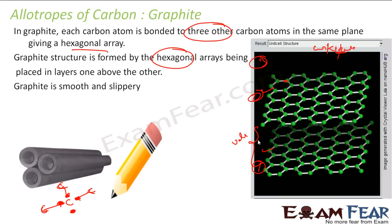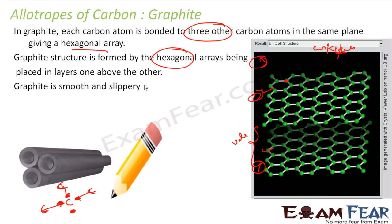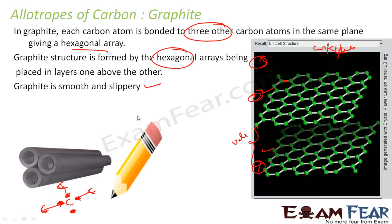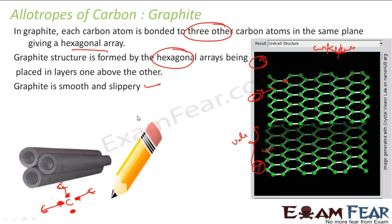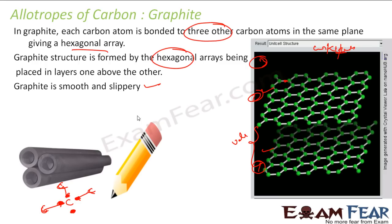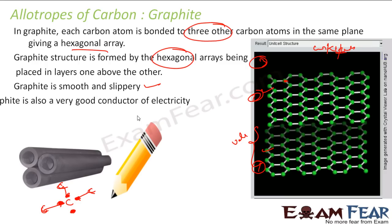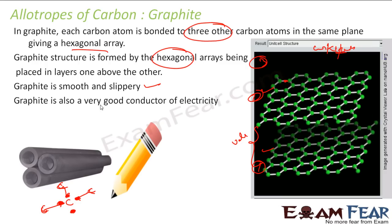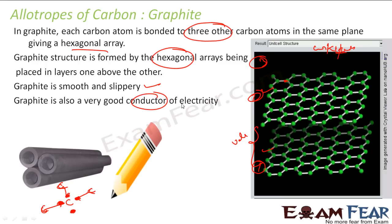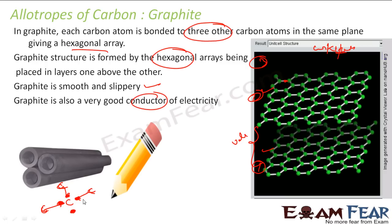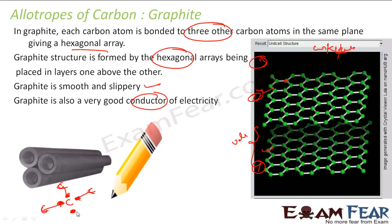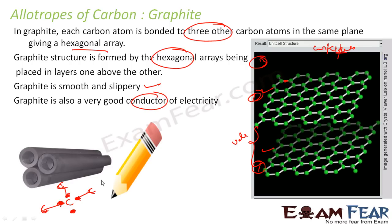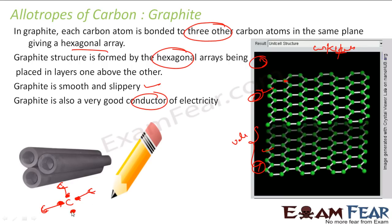And graphite is also a good conductor of electricity. This is because only three electrons are used for bonding, so one electron is free to conduct electricity.